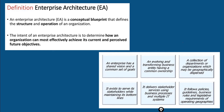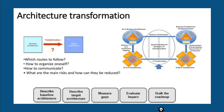An enterprise has a shared vision and a common set of goals. It is an evolving and transforming business entity with a common ownership, a collection of departments or organizations which may be geographically dispersed. It exists to serve its stakeholders while maintaining its bottom line, delivers services using business processes and multiple IT systems, and follows policies, guidelines, business rules, and legislative requirements. There are four architecture domains commonly accepted as subsets of enterprise architecture: Business Architecture, Application Architecture, Data Architecture, and Technology Architecture.